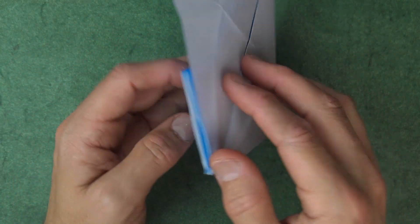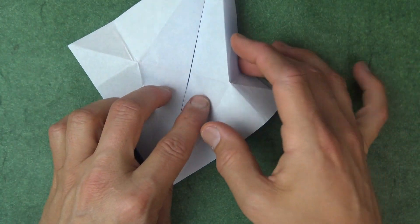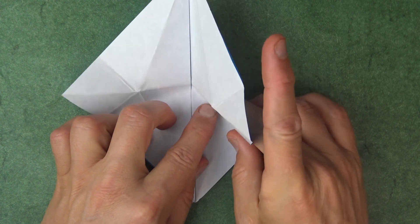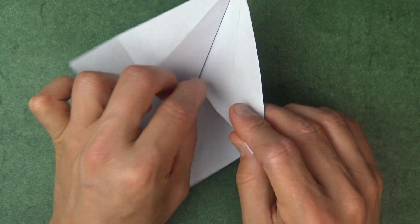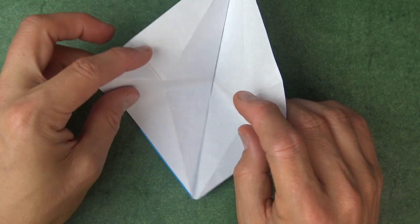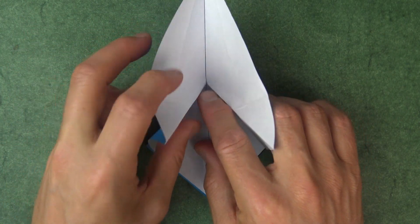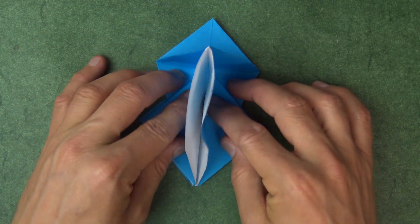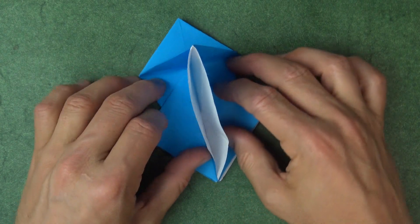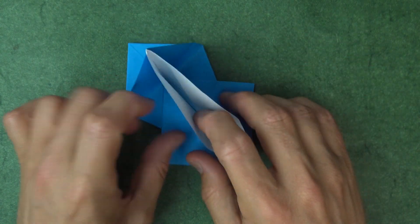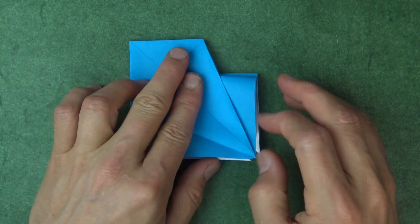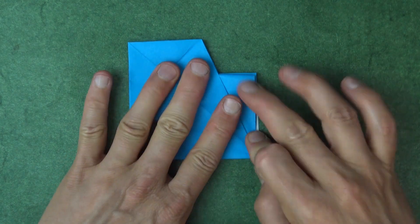And now repeat on this side. So first make the fold. And now bring it to the bottom and flatten. So it's like that. And now turn over and we're going to do the same thing on this side. So let's just make this crease. Bring it down and we'll do this one too at the same time. And open and flatten.